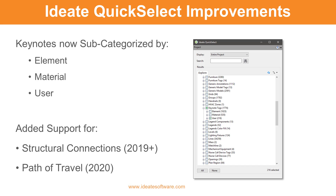IDA QuickSelect now expands on the keynote tags by subdividing the category into the three keynote types: Element, Material, and User. As part of your model review process, it is now much easier to identify the types of keynotes used. For example, if your office has a policy against the use of user keynotes, they will now be much easier to identify and sort out while using QuickSelect. In addition to the keynote subcategories, IDA QuickSelect now includes support for structural connections and the new Path of Travel feature added to the Revit 2020 product.